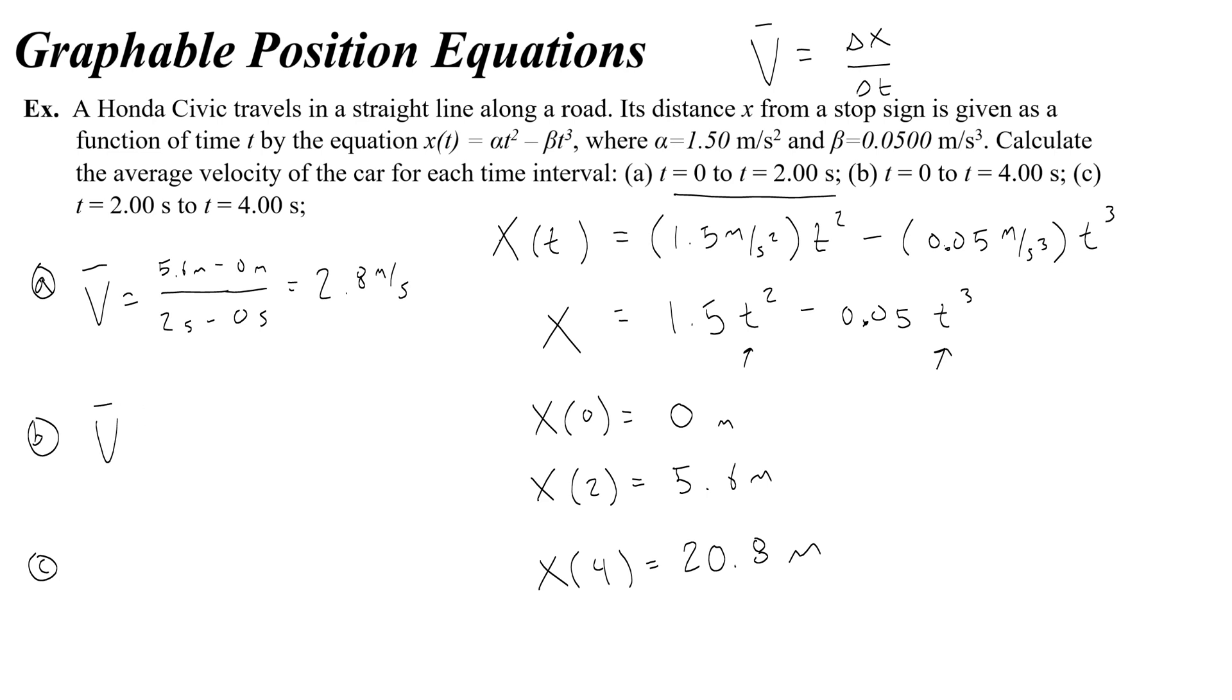And then the average velocity from 0 to 4 seconds is 4 seconds minus 0 seconds is 20.8 minus 0. Which is really just a fancy way of saying 20.8 over 4. And that's going to give you 5.2.